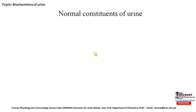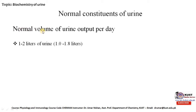Before going into diseases associated with urinalysis, we need to understand the different constituents normally present in urine. One normal parameter is the normal volume of urine output per day, which ranges from one to two liters. On average it is about 1 to 1.8 liters. If this amount is very low or very high, it can possibly indicate a problem that needs further investigation.